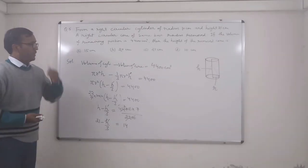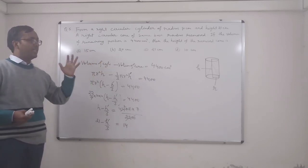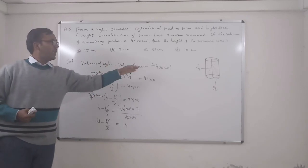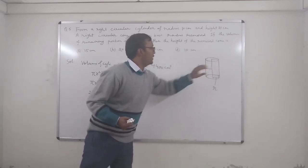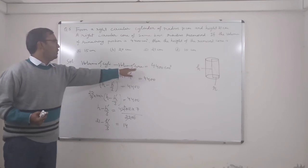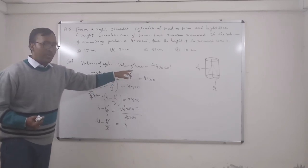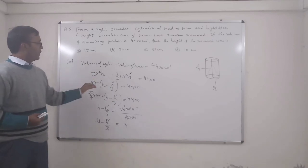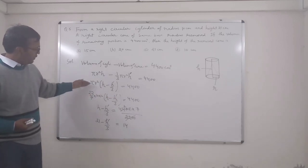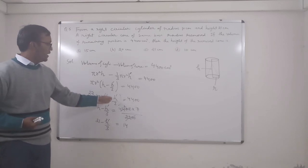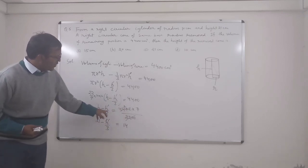So, a solid right circular cylinder has a cone removed from it with the same radius, but we need to find the height of that cone. We are told the volume of the remaining dotted portion. That means: volume of cylinder minus volume of cone = πr²h − (1/3)πr²h'. Factoring gives πr²(h − h'/3) = 4400. Substituting π = 22/7, r = 10 gives h − h'/3 = 14.